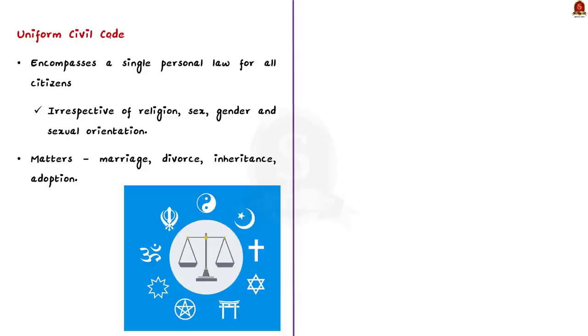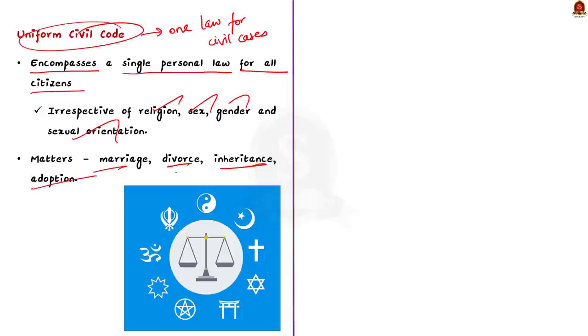It is nothing but a code which encompasses a single personal law for all citizens irrespective of religion, sex, gender and sexual orientation. The UCC calls for the formulation of one law for India regarding civil cases. The Uniform Civil Code envisions a single law that is applicable to all religious communities in matters such as marriage, divorce, inheritance and adoption.